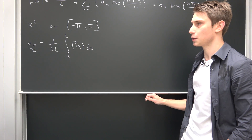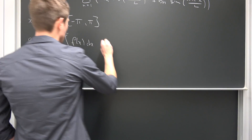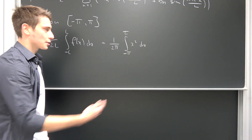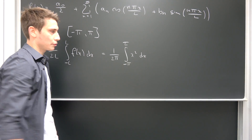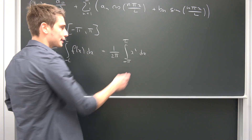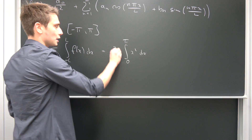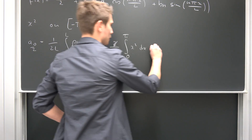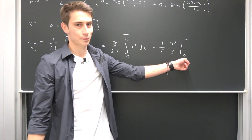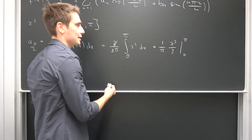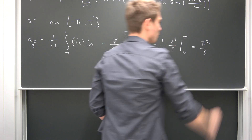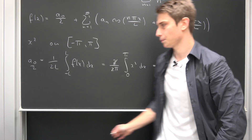Plugging in L = π, we get 1/(2π) times the integral from negative π to π of x² dx. This integrand is even, so we can rewrite this as (1/π) times the integral from 0 to π of x² dx — the two's cancel out. Integrating gives us (1/π) times x³/3 evaluated from 0 to π, which gives π³ divided by π, making just π²/3. So our a₀/2 = π²/3.